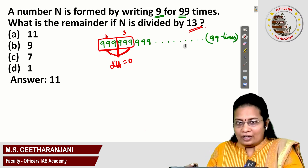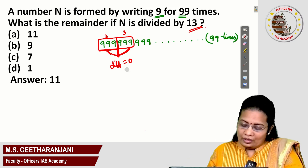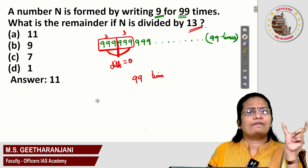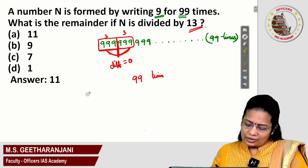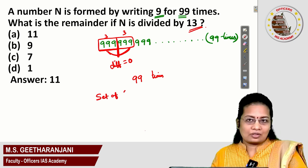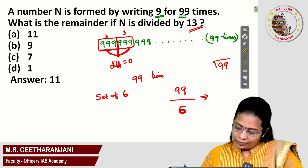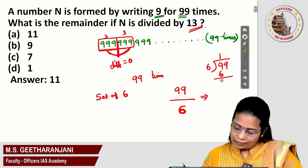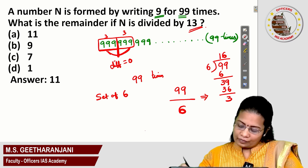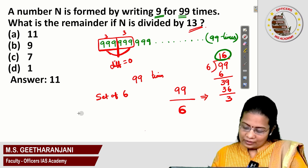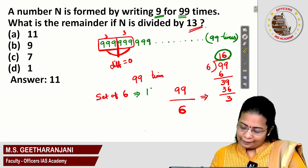How many 9s are there? Totally 99 times. Out of this 99, how many sets of 6 will we have? Just divide 99 by 6. The number of 6s in 99 is 16 times 6, which gives 96. So we have 16 sets. What is the remainder? The remainder is 3.